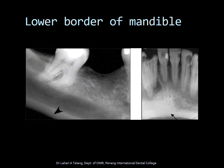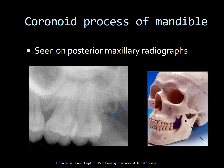The lower border of the mandible is visible in both the anterior and posterior regions as a dense radiopaque line. The coronoid process of the mandible is interestingly seen on posterior maxillary radiographs and appears as a dense triangular shadow on posterior mandibular radiographs.